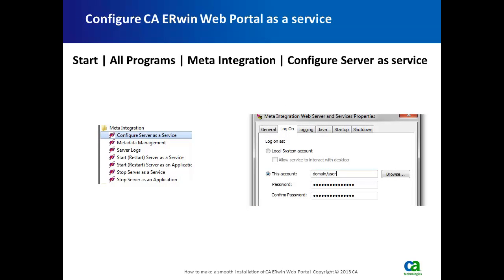After CAA Erwin Web Portal installation is finished, we need to configure it as a service. This can be done by going to Start, All Programs, Meta Integration, and selecting 'Configure Server as a Service.'